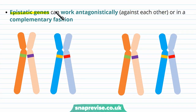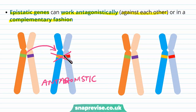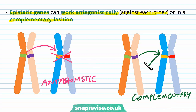These epistatic or interacting genes can work antagonistically, meaning they work against each other, or they can work in a complementary fashion. In antagonistic epistasis, one gene masks the other — for example, the presence of one gene might inhibit the expression of the other. In complementary epistasis, the genes actually encourage each other's expression.